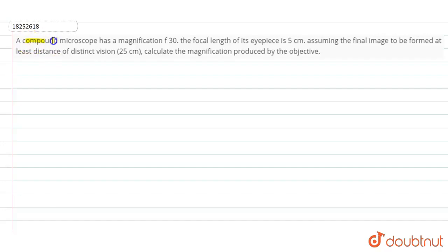Question has asked, compound microscope has a magnification of 30. The focal length of its eyepiece is 5 cm. Assuming that the final image is formed at least distance of distinct vision that is equal to 25 cm, calculate the magnification produced by the objective.